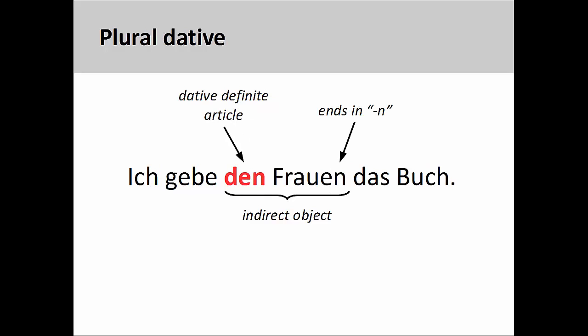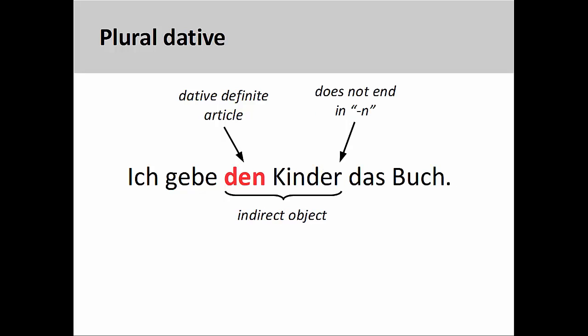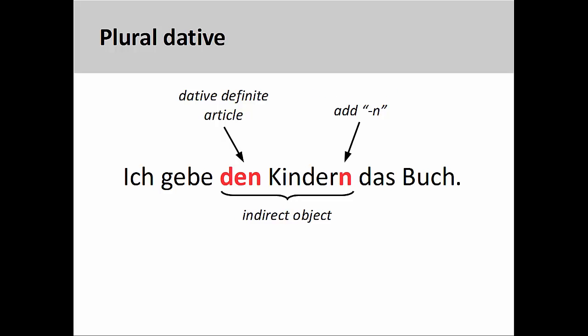The plural dative requires a bit more explanation. In this sentence, 'Ich gebe den Frauen das Buch' — I give the book to the women — the plural dative article 'den' looks the same as the masculine accusative. Also note that the plural form of the noun ends in 'en', which is good since we don't need to do anything else to the noun in this case. However, 'Ich gebe den Kinder das Buch' — I give the book to the children — presents a problem. If a plural noun is in the dative case and does not end in 'en', then we need to add 'en' to the noun: 'Ich gebe den Kindern das Buch.' You will need to do this to every plural noun in the dative case that does not end in 'en'.